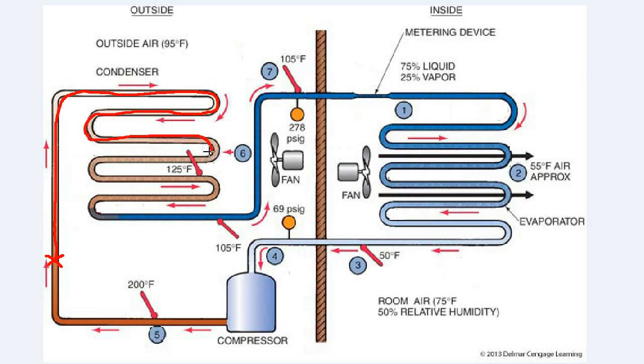To get it to a certain point in the condensing coil, we may be 50-50 vapor liquid. As we continue to remove latent heat, we are going to eventually get to a point in the condensing coil where we are 100% liquid. We can't change state anymore because we are at 100% liquid, and we are now at the beginning of the subcooling part of the condensing coil.